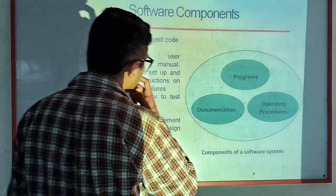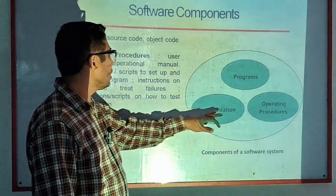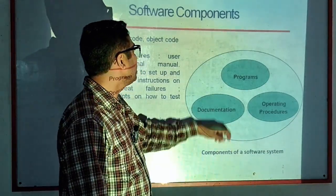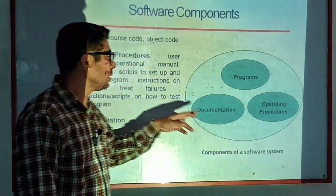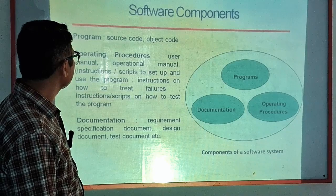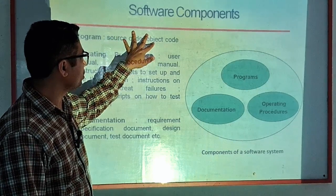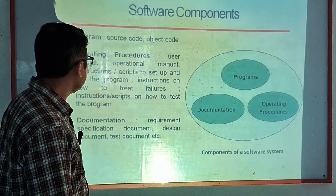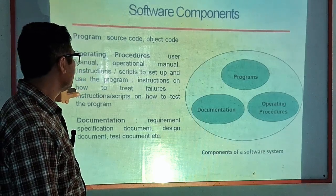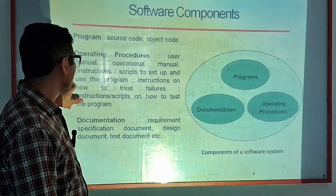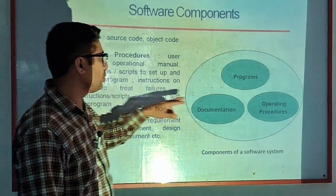Now we will study the components of computer software. There are three basic components in a software system: number one is program, second is documentation, and third is operating procedures. The program consists of source code and object code. Operating procedures include user manuals, operational manuals, instructions, scripts to set up, instructions on how to treat failures, and instructions on how to test the program.